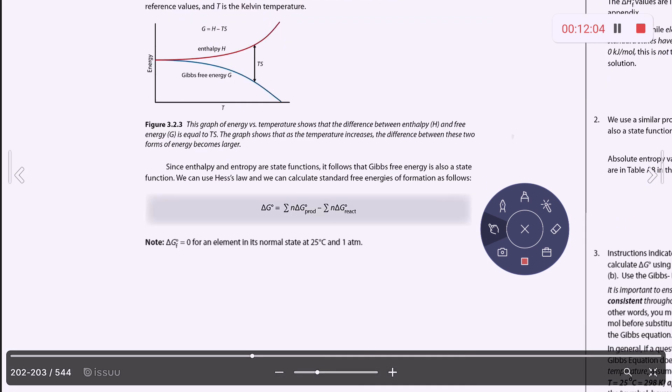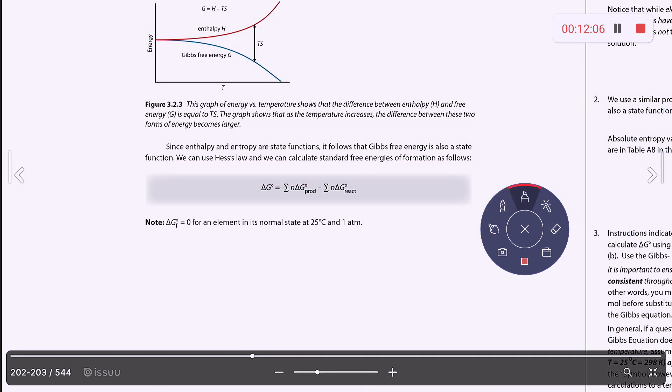Since enthalpy and entropy are state functions, and you definitely want to know this, it makes sense that Gibbs free energy is also a state function. And we can use Hess's law to calculate the standard free energies from the table in the back of the book. So it's the sum of the free energy of the products minus the sum of the free energy of the reactants. And if there's coefficients, you multiply those standard values by their coefficients. You should make a note that if Gibbs free energy is zero for an element in its normal state, that means we're at 25 degrees Celsius and one atmosphere pressure.